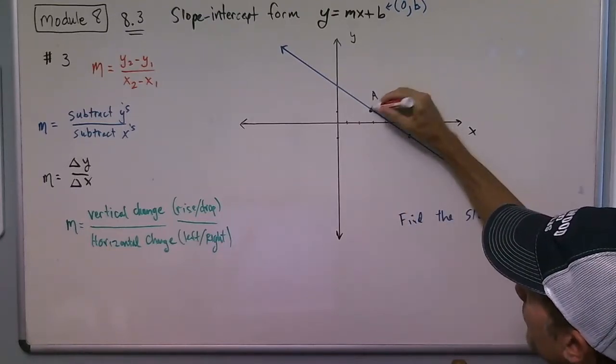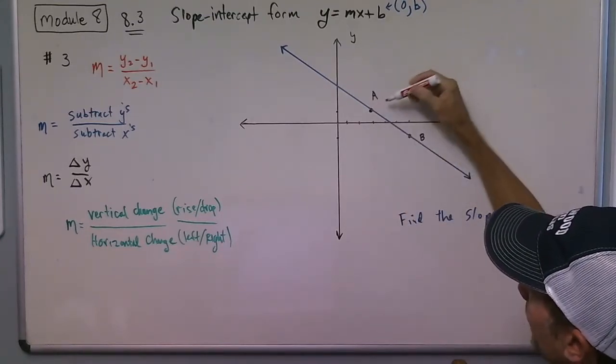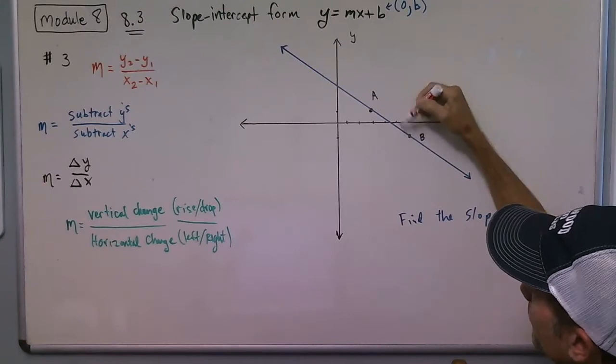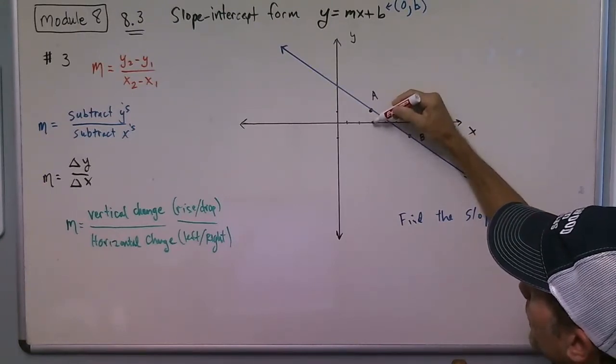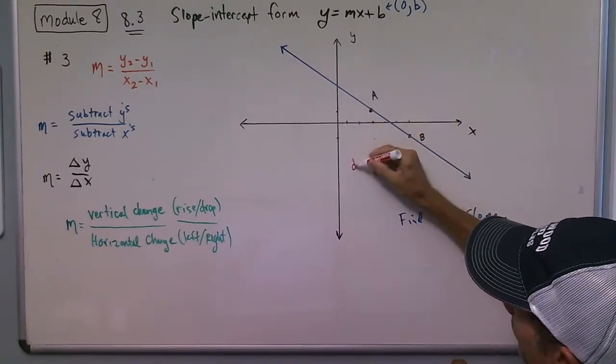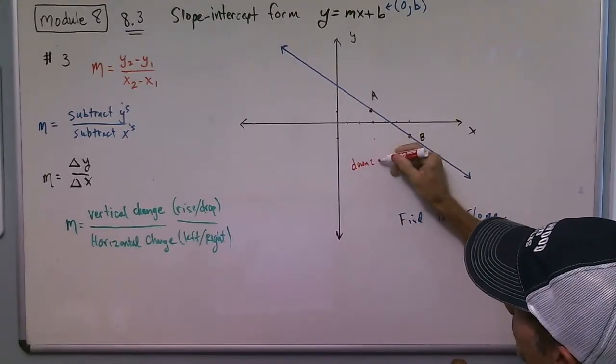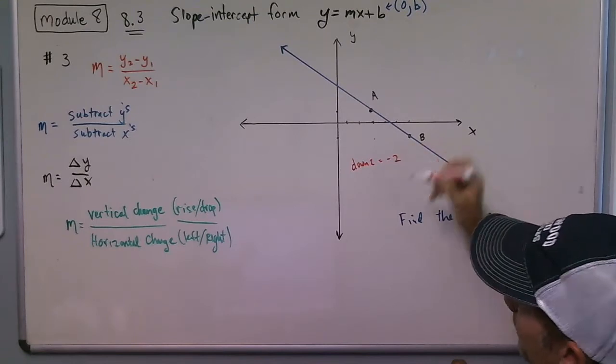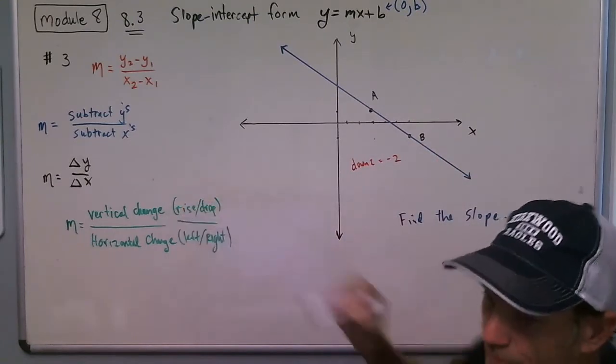If I start at A here and I think about, okay, what happens to get to B here? Well, I go down 1, 2, so down 2, which is equal to negative 2. That's my vertical change.